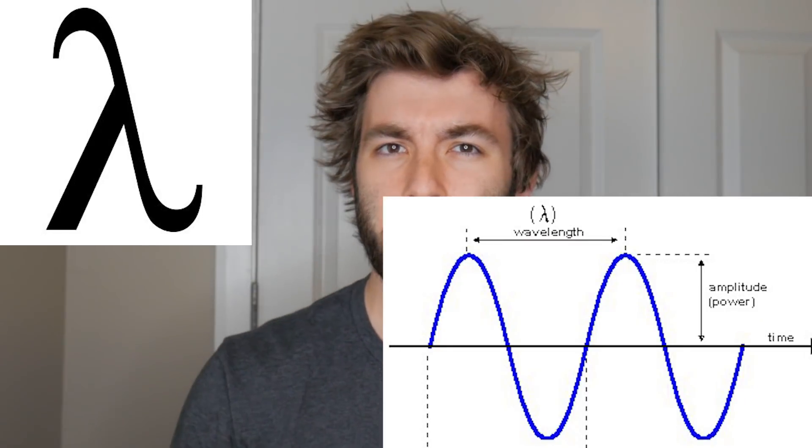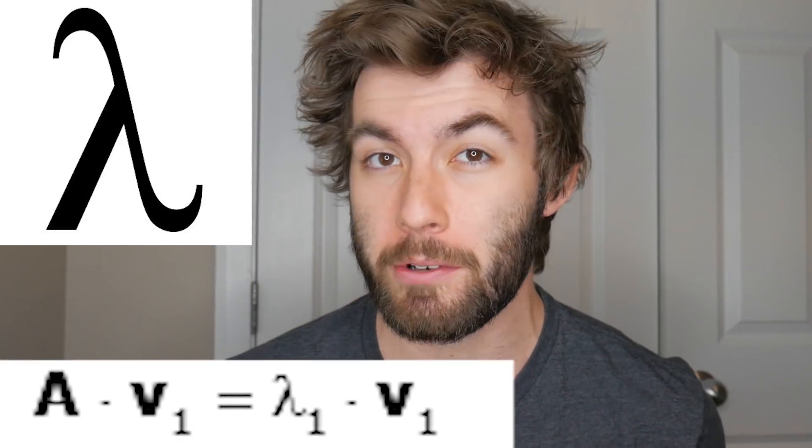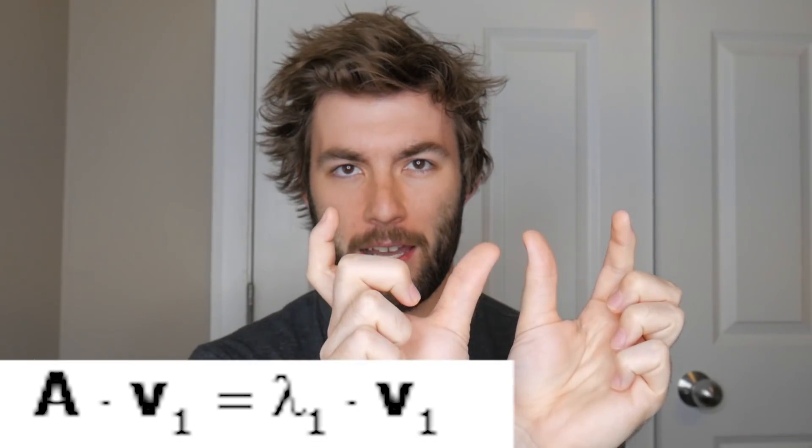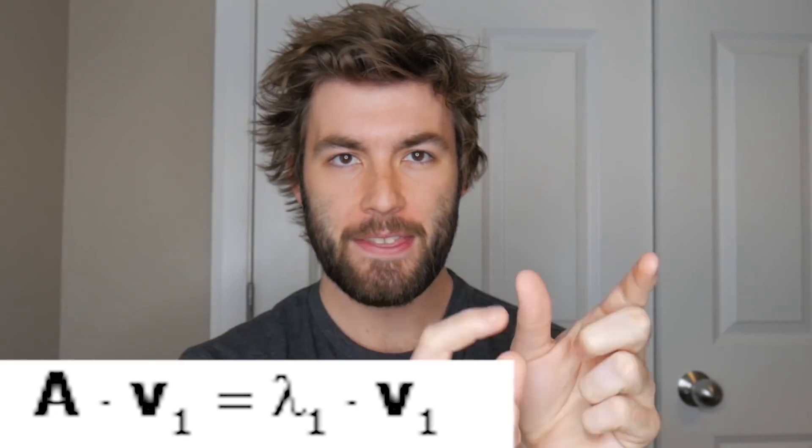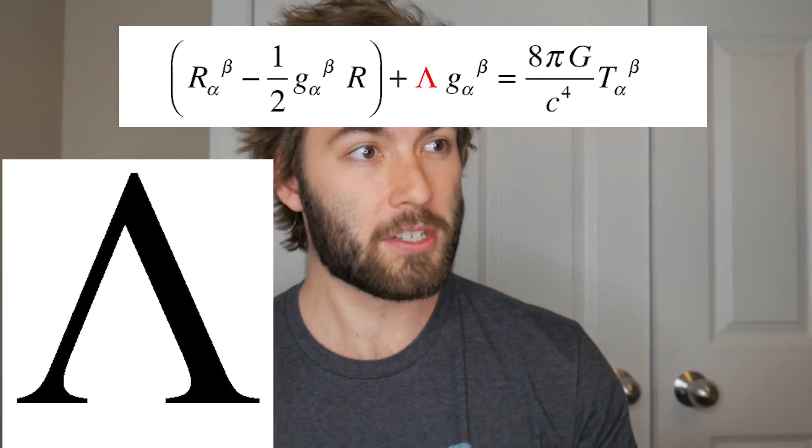On to lowercase lambda. Lowercase lambda is usually reserved for talking about some kind of wavelength of a particular wave, but it's also frequently used to describe the eigenvalue of something — think of something acting on something else and getting that thing back times a scalar; that scalar is the eigenvalue. Capital lambda is almost exclusively used to talk about the cosmological constant, which is the rate at which the universe is expanding, but you'll sometimes see it in perturbative or Taylor series expansions.